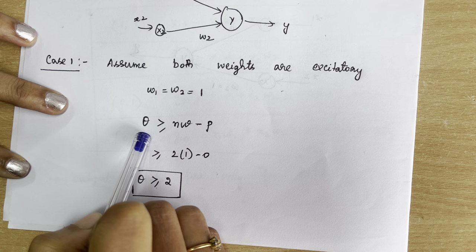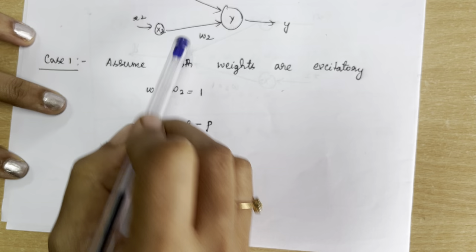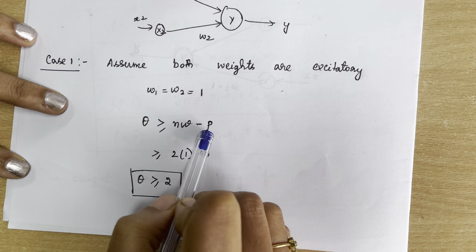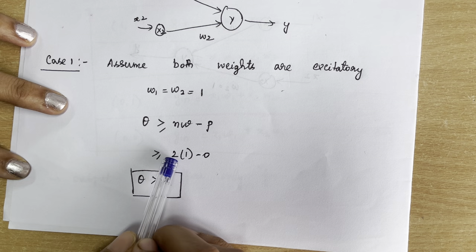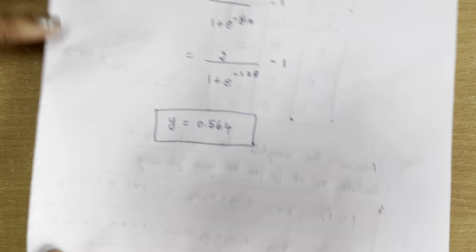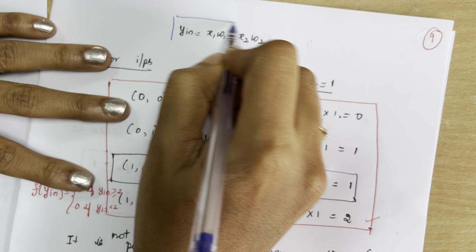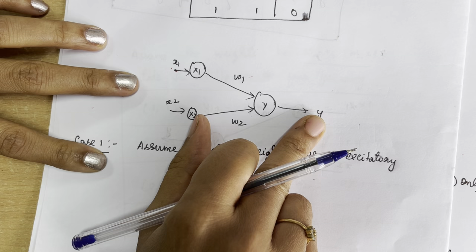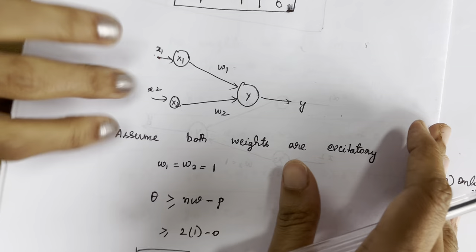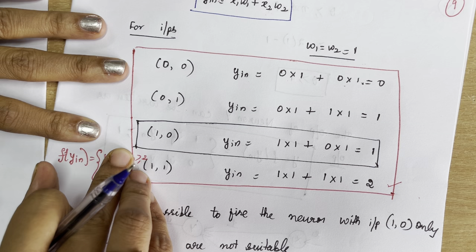We substitute these weights into the threshold formula. The threshold theta is greater than or equal to n·w minus p. The number of weights is 2, excitatory weight w = 1, and there are no inhibitory weights so p = 0. Therefore, theta is greater than or equal to 2. The y_input formula from the diagram is: y_input = x1·w1 + x2·w2.